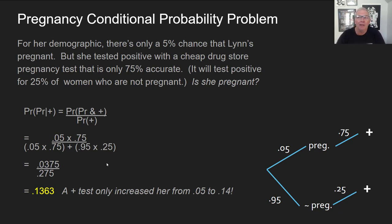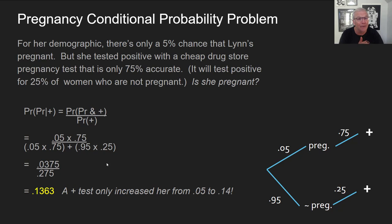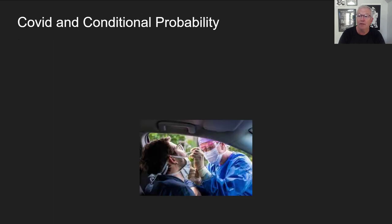What's the probability Lynn is pregnant? 14%. She started out at 5%, and now with a positive test result she's only gone up to 14%. That's a bit counterintuitive. There are two reasons why the number is still so low: a pretty low base rate, and a pretty inaccurate test — only 75% accurate. A coin toss is 50%, so this is not as good a test as we want. Lynn went from 5 to 14%; she's still probably not pregnant, but maybe she wants to take another test to be sure.